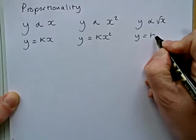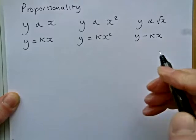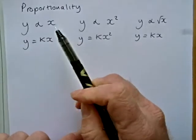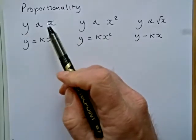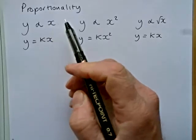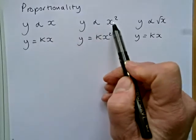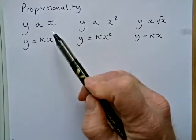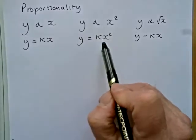So this means y equals kx. So to start these questions off you have to be able to either interpret this sign here or the words y is proportional to x or y is proportional to x squared. And you interpret it by writing down the appropriate equation.